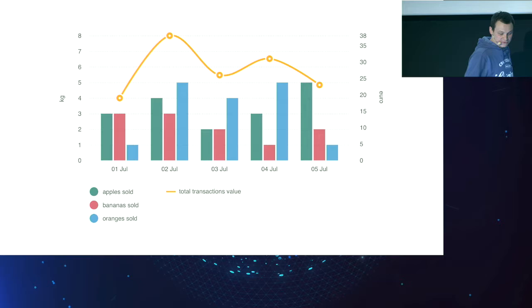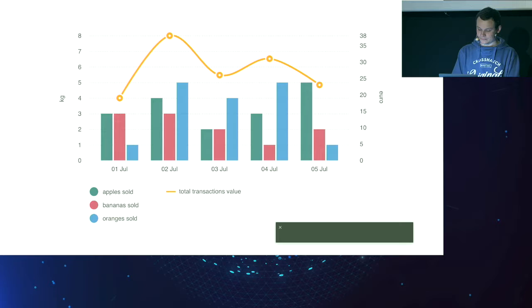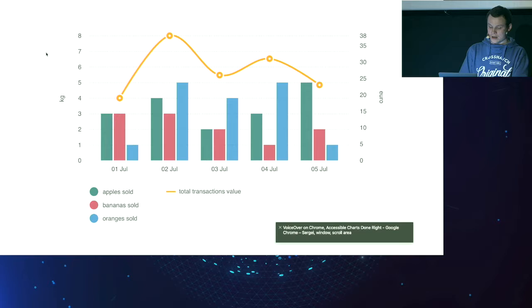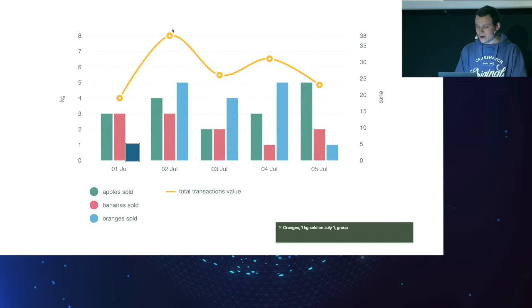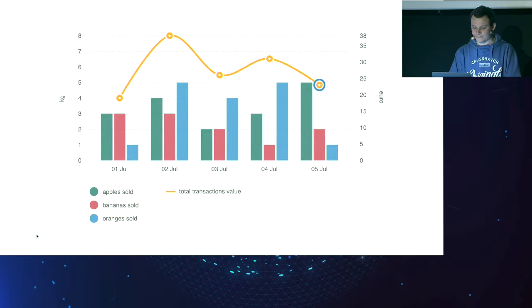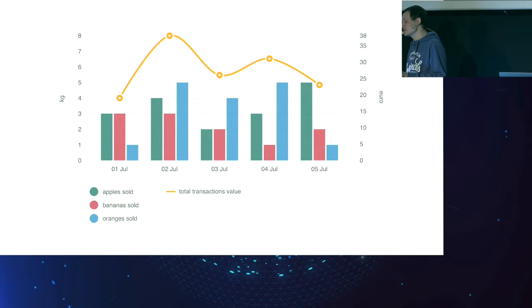Let me demonstrate how this works with a screen reader. I'll start VoiceOver now and use the tab key to focus on those elements. By clicking tab, I can hear: 'Apples, three kilograms sold on July 1st.' 'Bananas, three kilograms sold on July 1st.' 'Oranges, one kilogram sold on July 1st.' And the same way I can get transaction value data — '31 euro, July 4th, total transaction value.' '23 euro, July 5th, total transaction value.' Congratulations — we just built a fully accessible chart. But we can make it even better.